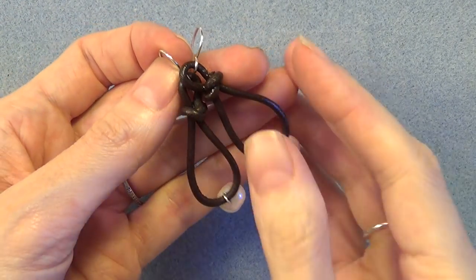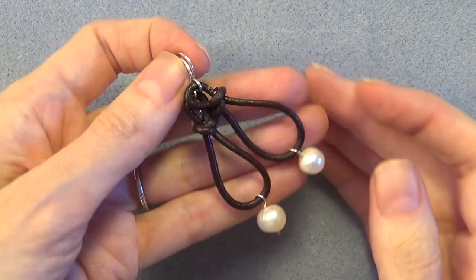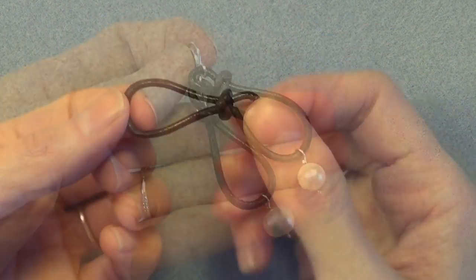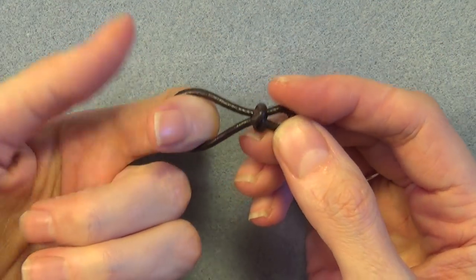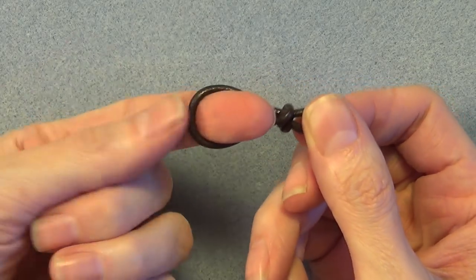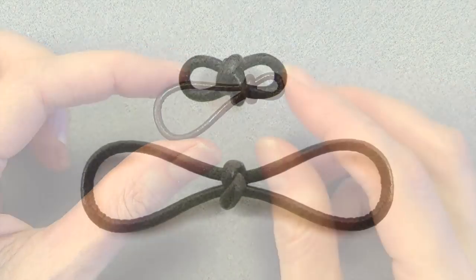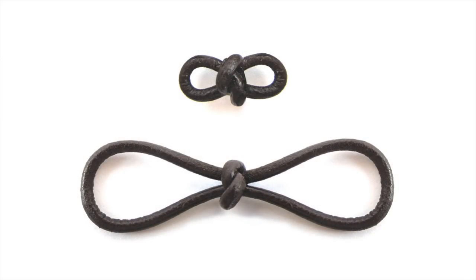Some things you can use these links for, earrings of course, but you can also use it as a loop for a button or a hook clasp or as a link in a necklace or bracelet. You can also use the same technique but make both loops the same size and have a symmetrical link. You can make them large or small so there's lots of different things you can do and I'd love to hear what ideas you come up with for ways to use a leather link like this. Maybe even something other than jewelry.